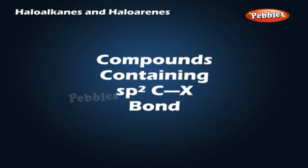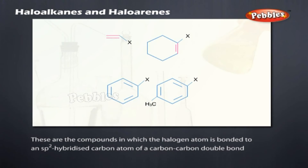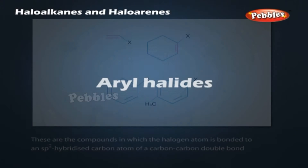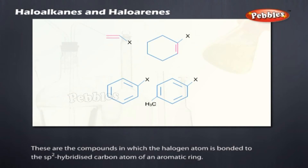Compounds containing sp2 C–X bonds: vinylic halides are compounds in which the halogen atom is bonded to an sp2 hybridized carbon atom of a carbon-carbon double bond. Aryl halides are compounds in which the halogen atom is bonded to an sp2 hybridized carbon atom of an aromatic ring.